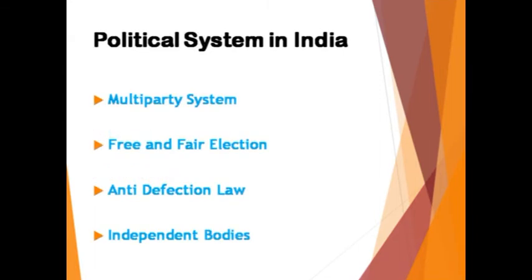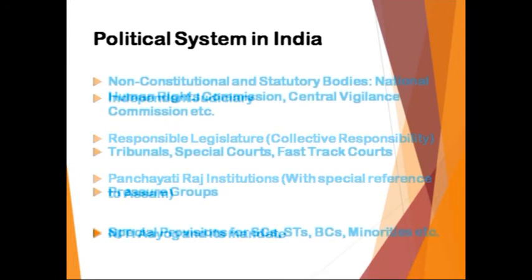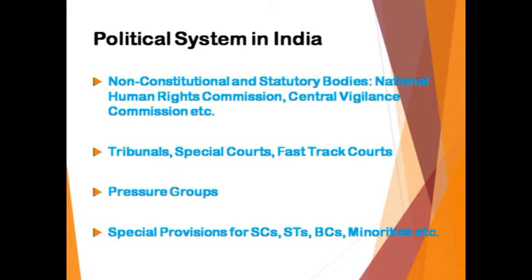From the political system in India, we need to study the multi-party system, free and fair elections, anti-defection law, independent bodies, independent judiciary, responsible legislature, and the collective responsibility of the legislature. Panchayati Raj institutions with special reference to Assam, NITI Aayog and its mandate. Non-constitutional and statutory bodies like the National Human Rights Commission and Central Vigilance Commission. Then we need to study tribunals, special courts, fast track courts, and pressure groups. We need to study the special provisions for minority groups, SCs, STs, and other backward classes.